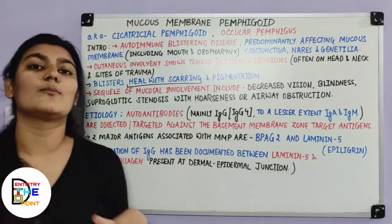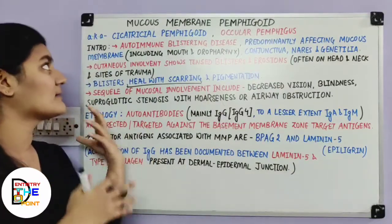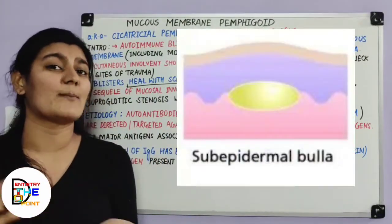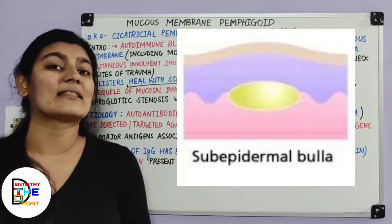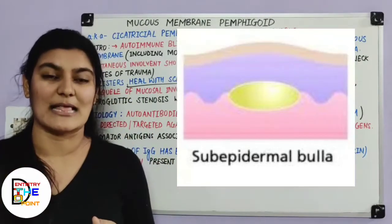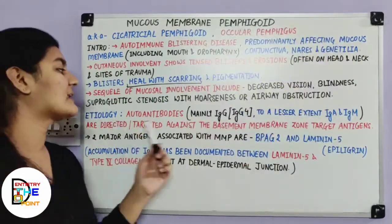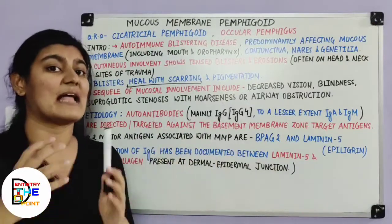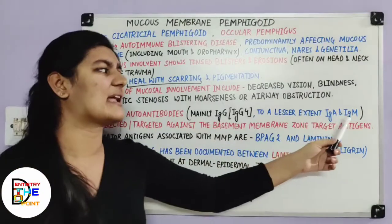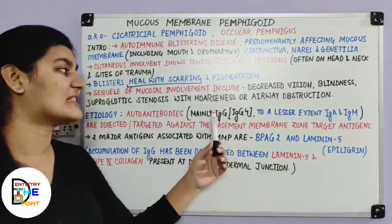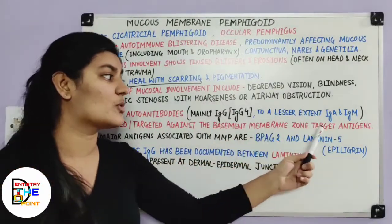The etiology is almost the same as bullous pemphigoid. Both mucous membrane pemphigoid and bullous pemphigoid are subepidermal blisters — the blisters are present below the epidermis, between the dermis and epidermis. There are autoantibodies, mainly IgG of the IgG4 type, and to a lesser extent IgA and IgM, which are directed against basement membrane zone target antigens.